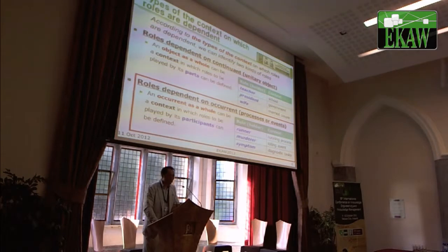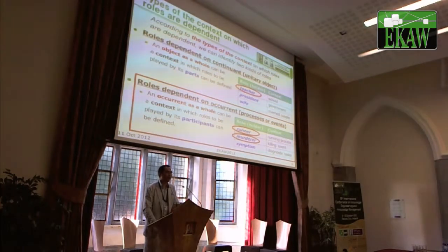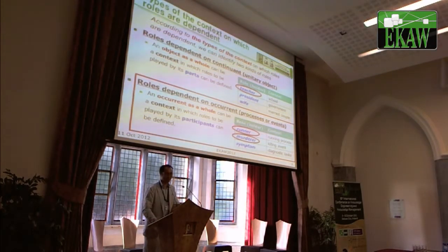Here we focus on the occurrence-dependent type of role, and especially we pick up three examples — teacher, learner, and murderer — and we clarify the ontological difference of these roles.